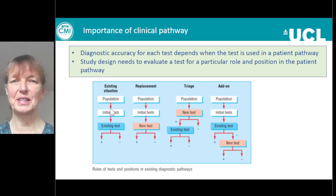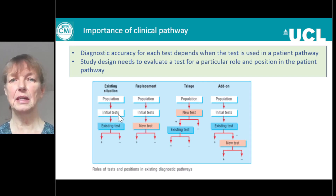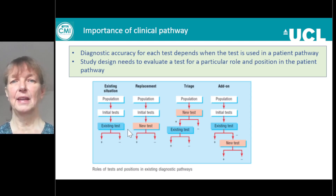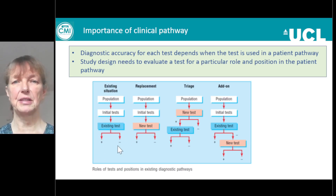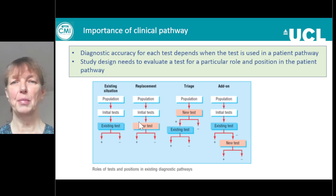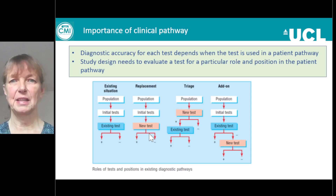Let's look at the existing situation. We have a population of patients who have some initial tests — these are the inclusion criteria for our study. Here's our diagnostic accuracy study: we're taking an existing test and working out who's positive or negative with that test. Now let's imagine we want to replace the existing test with a new test — we'll call this a replacement study.